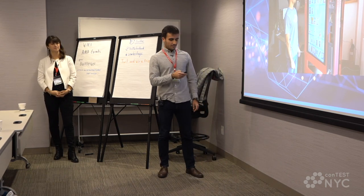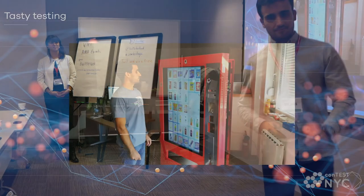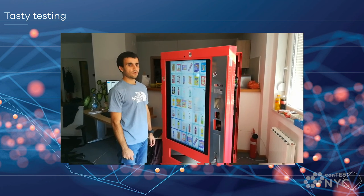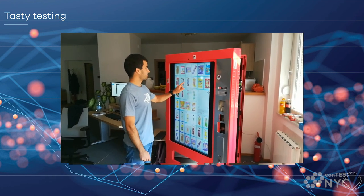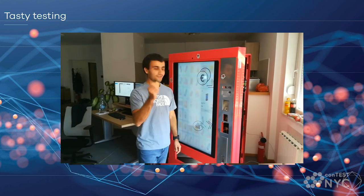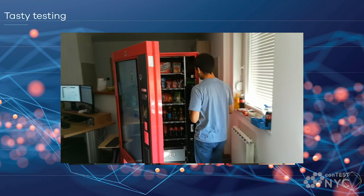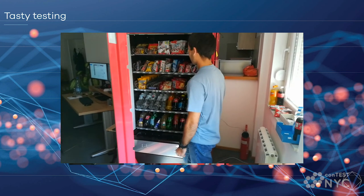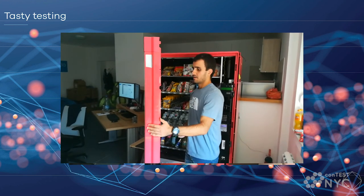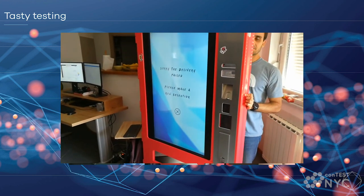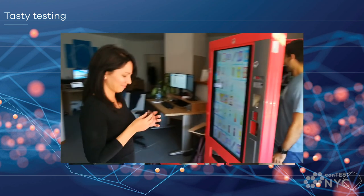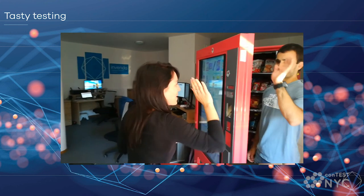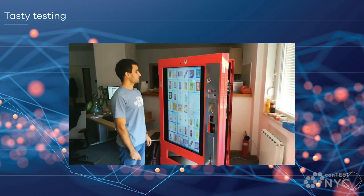And now the test case: product not delivered. Right now I will add one product to the shopping cart and pay with coins. Then I will catch the product before it is delivered. And it's a real product — but the date is expired. As you can see, the product is not delivered. Don't try it at home, please.